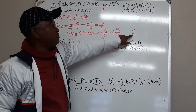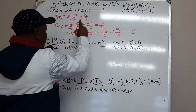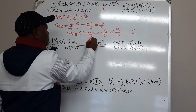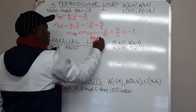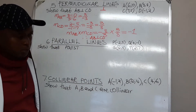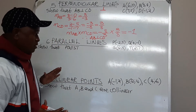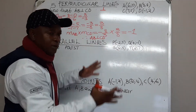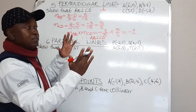Once you multiply the gradients and get negative 1, you conclude that AB is perpendicular to CD — the two lines are perpendicular. Now we come to parallel lines. Parallel lines are lines which remain equidistant from each other and they will never meet.